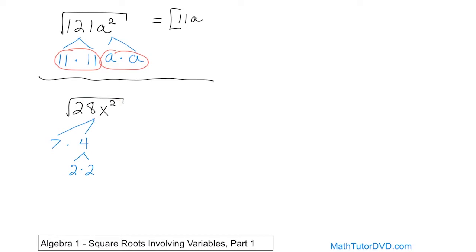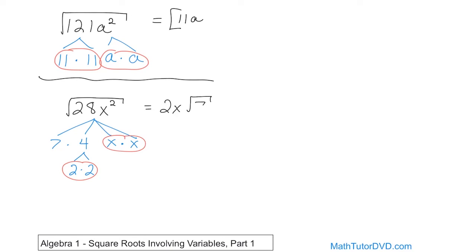x times x gives you x², so you have an x here and an x here. Make sure you understand: if you take 7 times 2 times 2 times x times x, you get 28x². Now everything is as simple as it can be. You look for pairs: a pair of 2s and a pair of x's. The 7 has no pair, so he stays under the radical. Pull out a single 2 and a single x, giving 2x, and the 7 remains under the radical. The answer is 2x√7.